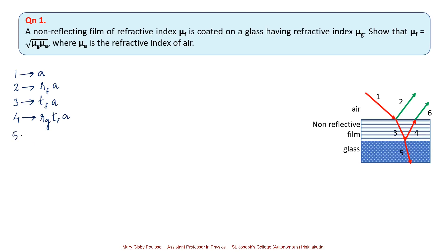The fifth ray can be represented as the transmission coefficient on the glass surface acting upon the third ray: TG times TF times A. Finally, the sixth ray can be represented as the transmission coefficient on the air surface — it is emerging from the film to the air — acting upon the fourth ray: TA times RG times TF times A. So I have represented each ray in terms of the amplitude of reflection or transmission coefficients.